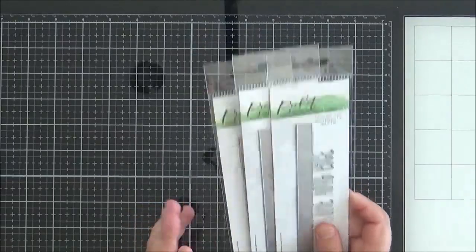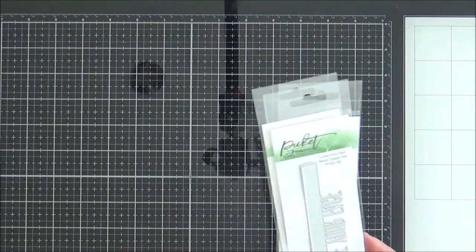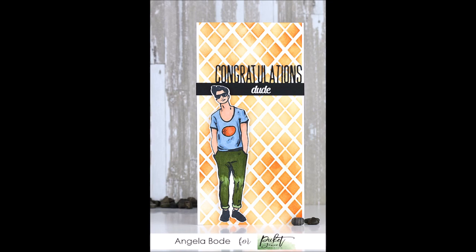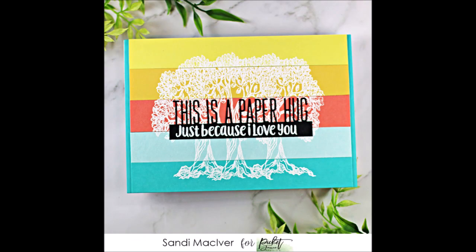And I've got another example of a card using the Hello Word Topper die, which I'm going to show you in a moment. Time for another two cards from the team. The first up is Angela. She's used the Congratulations Topper die, but she's used it on a slimline card. And you can see how well that works too. Sandy's card here, I love for all its color, but I really like the bold sentiment across the middle. And she has used the This Is A Paper Hug Word Topper die on there.